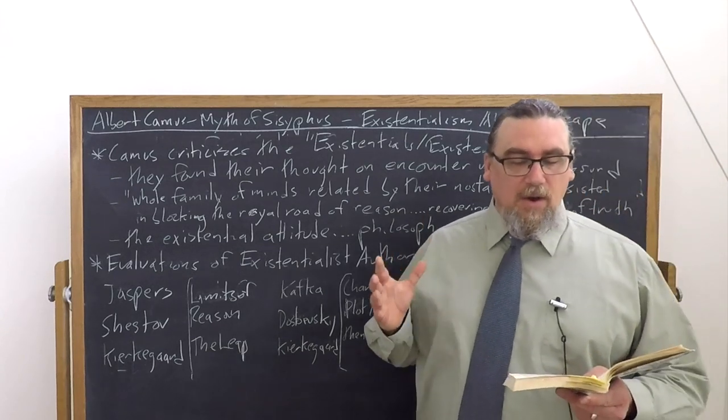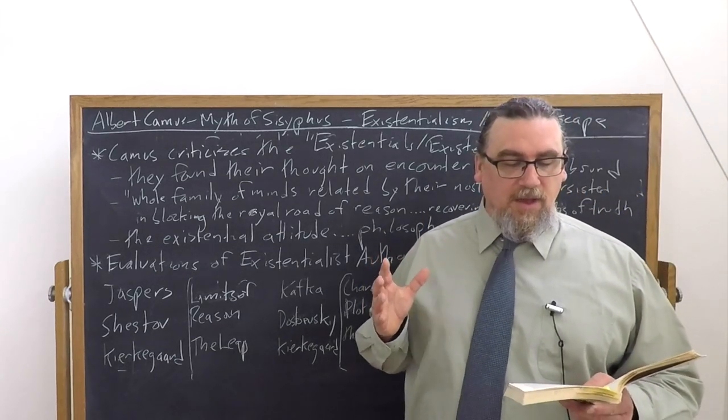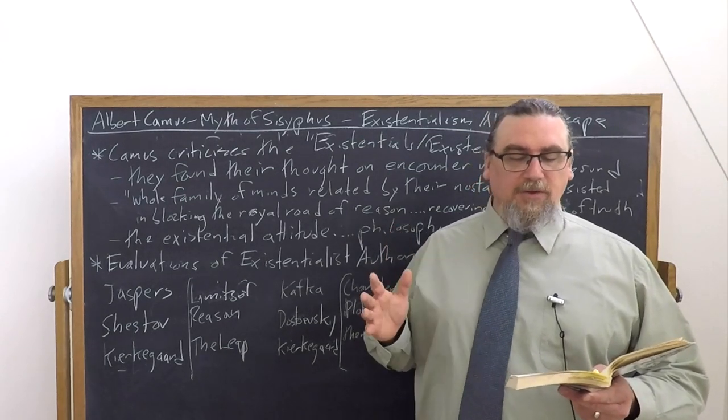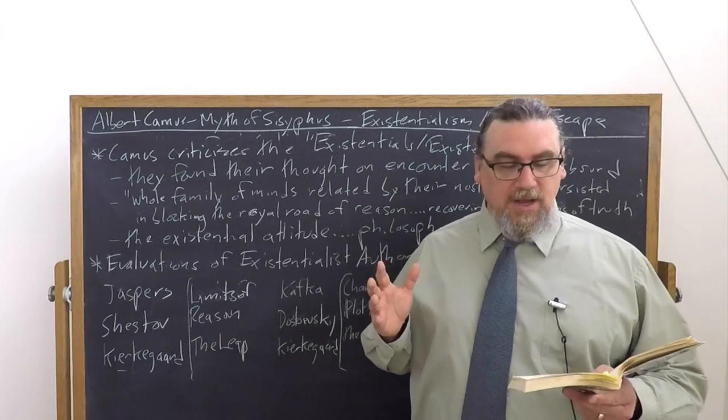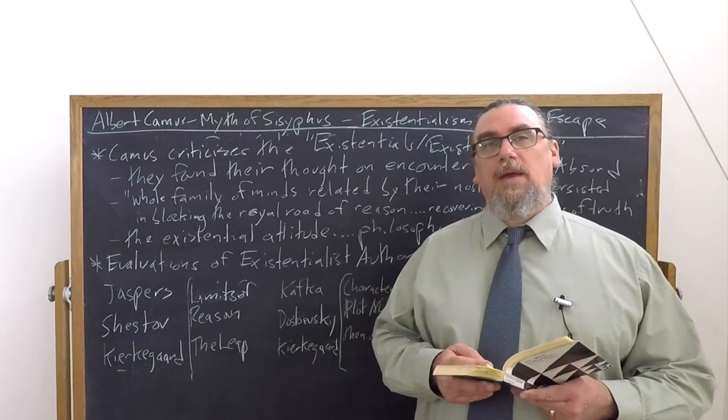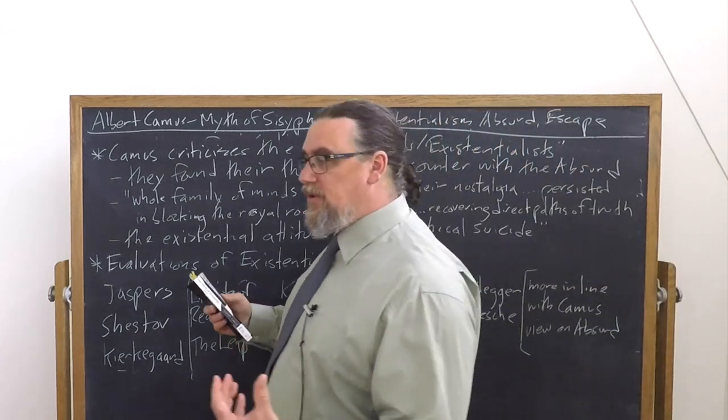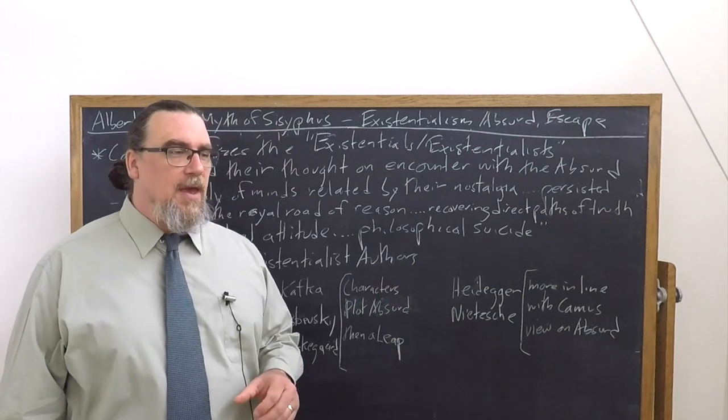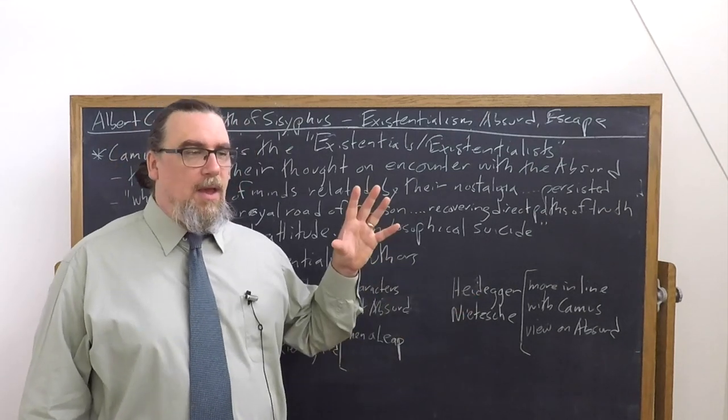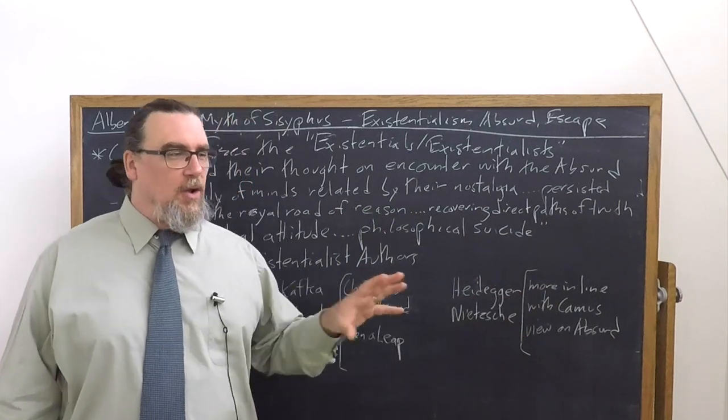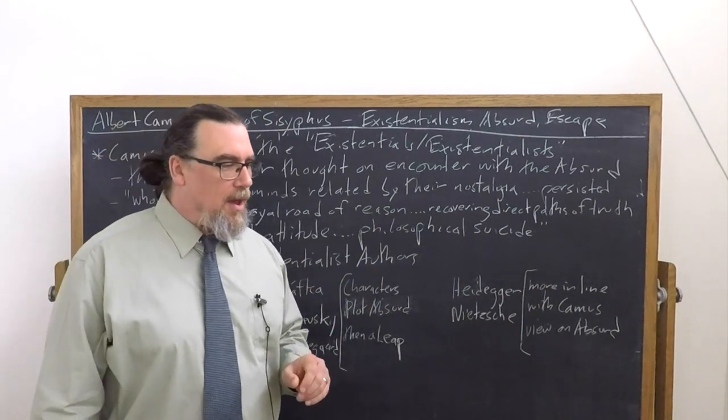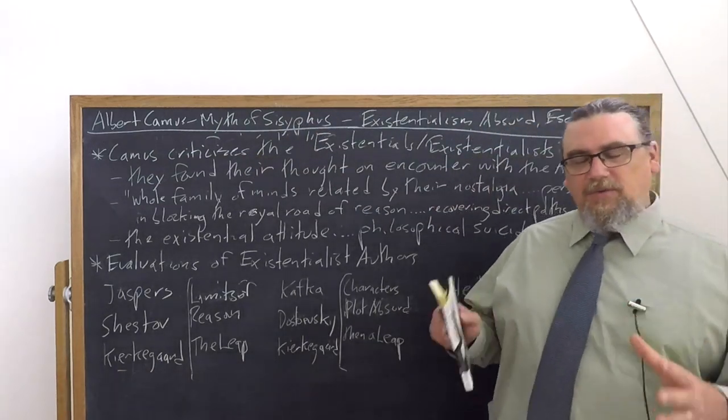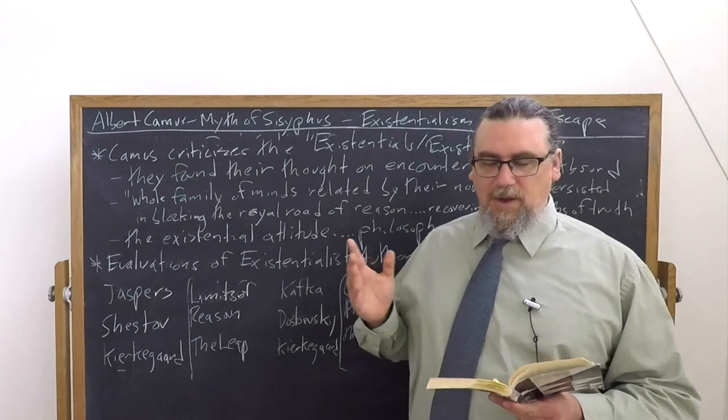And so he's going to talk about what he calls an entire family of minds related by their nostalgia, but opposed by their method or aims, that have persisted in blocking the royal road of reason and in recovering the direct paths of truth. And he says, here I assume these thoughts to be known and to be lived. Whatever may be or have been their ambitions, all started out from that indescribable universe where contradiction, antinomy, anguish, or impotence reigns. So the existentialists have a common starting point.